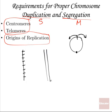Telomeres are always at the ends of chromosomes. They are repetitive sequences that cap chromosome ends, providing protection from nucleolytic cleavage and preventing adhesion to other chromosomes. We need centromeres and telomeres as well as origins of replication to proceed through proper duplication and segregation of chromosomes.